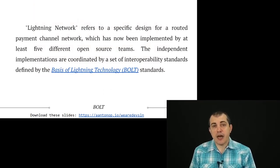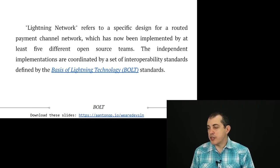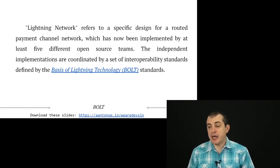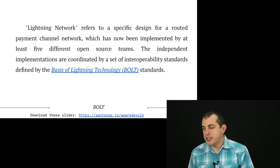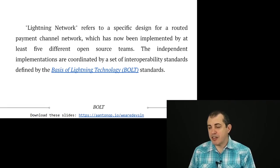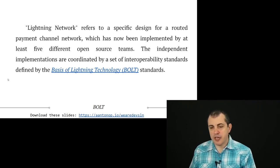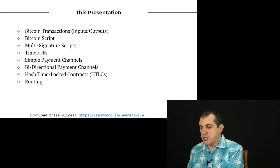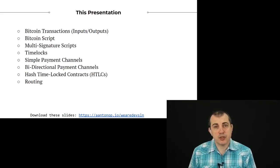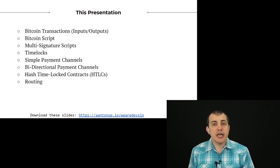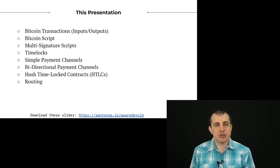So let's get started. What is the Lightning Network? The Lightning Network is a specific design for a routed payment channel network, which has been implemented by at least five different open source teams. These independent implementations are coordinated by a set of interoperability standards — the Basis of Lightning Technology, or BOLT standards — which define exactly how the protocol works, similar to RFCs. Today we'll cover the basic prerequisites necessary to understand what the Lightning Network is and how it works.